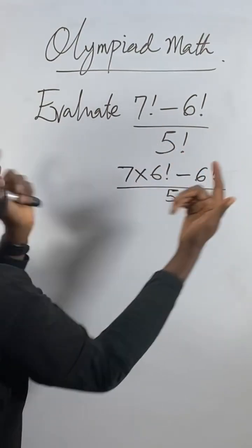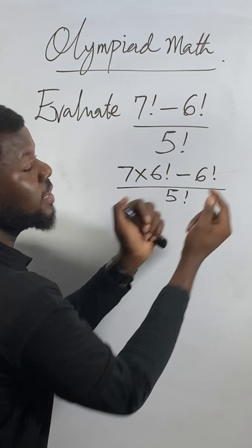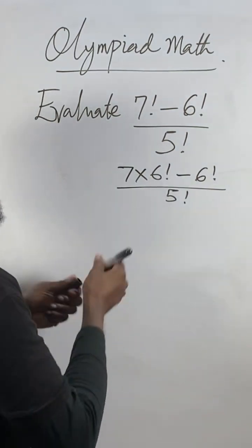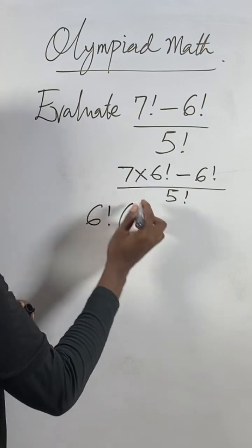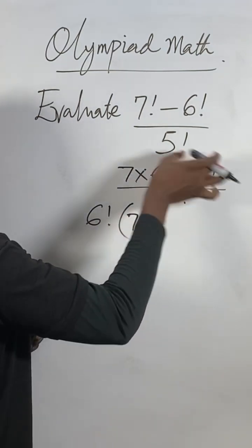When you factorize, you're separating the common terms. For both terms in the numerator, you can factor out 6 factorial. If you factor out 6 factorial from the first term, only 7 will remain.